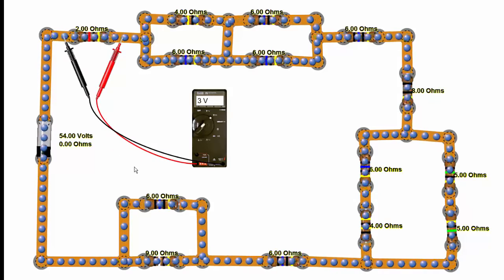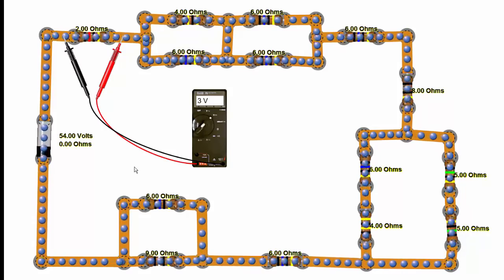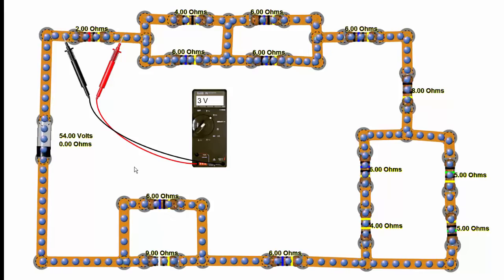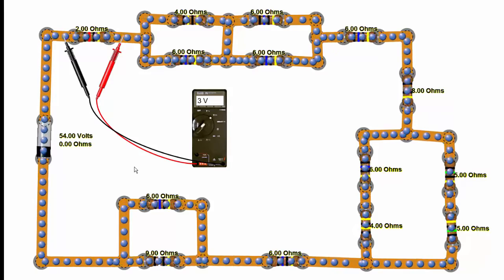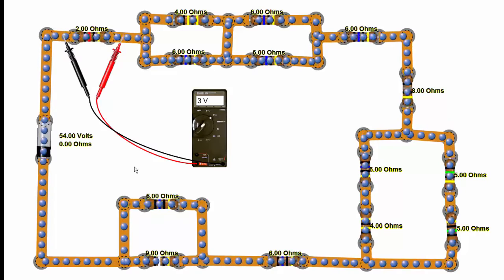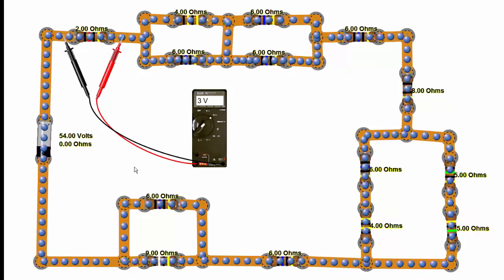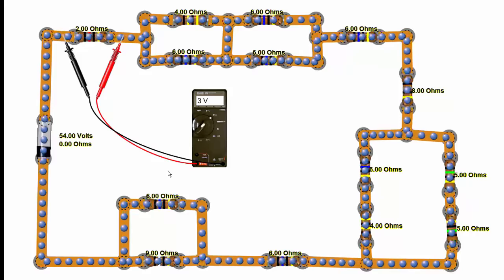One way to think about this is that when we have electrons coming up through the circuit, on the negative side of the device, we're basically going to have what we can kind of think about as a higher electron density than we are on the other side of the device. And so when I do this, I get across the 2-ohm resistor, I get a 3-volt reading.